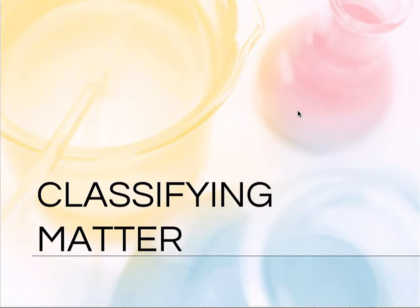Hey, it's time to do chemistry. You're with Mrs. Mays and today we're talking about classifying matter. First, let's decide how do we know if something is matter and if it's not matter. There are two things to look for. First of all, matter takes up space — it has volume.